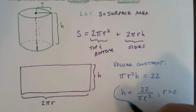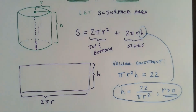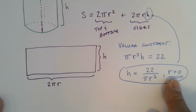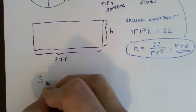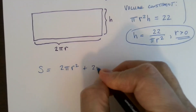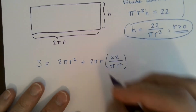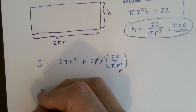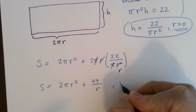Substituting h = 22/(πr²) into the surface area formula: S = 2πr² + 2πr · (22/(πr²)). The π's and one r cancel, giving S(r) = 2πr² + 44/r, valid for r > 0. Now we need to find the value of r that minimizes this function on an open, unbounded interval — no endpoints, so we use the first derivative test.